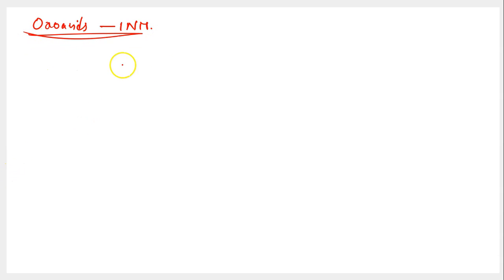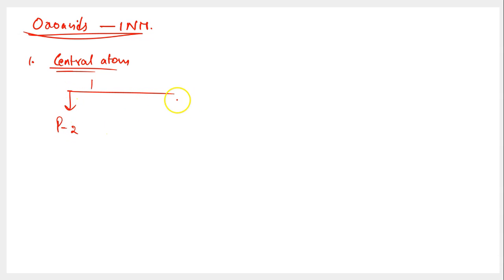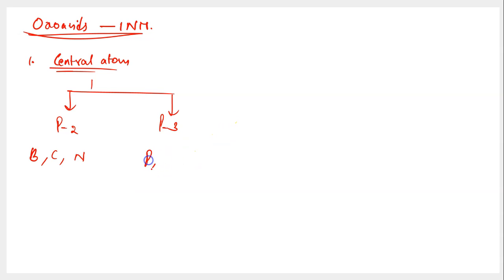To draw these structures we need to follow two rules. Rule number one: observe the central atom. The central atom is usually an element from period 2 — boron, carbon, or nitrogen — or from period 3 — phosphorus, sulfur, or chlorine. You can also observe OXO acids formed by bromine (period 4) and iodine (period 5), but let's focus on what appears frequently in our syllabus.